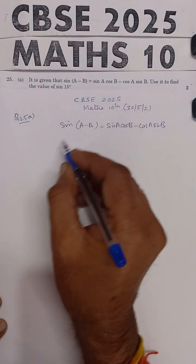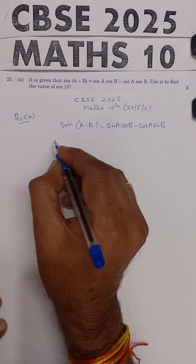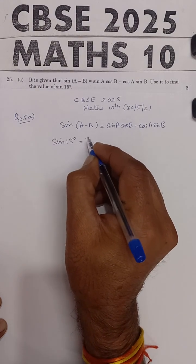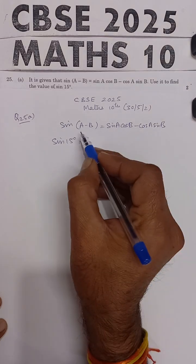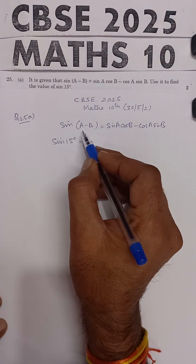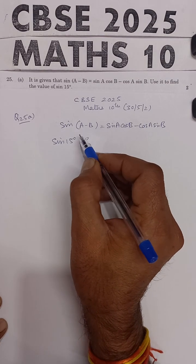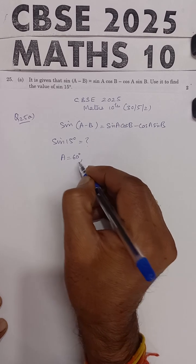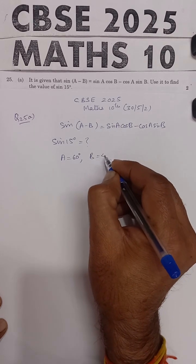Find the value of sine 15 degrees. You have to use this relation to find the value of sine 15. Now, sine 15 degrees can be calculated by assuming A is equal to 60 degrees and B is equal to 45 degrees.